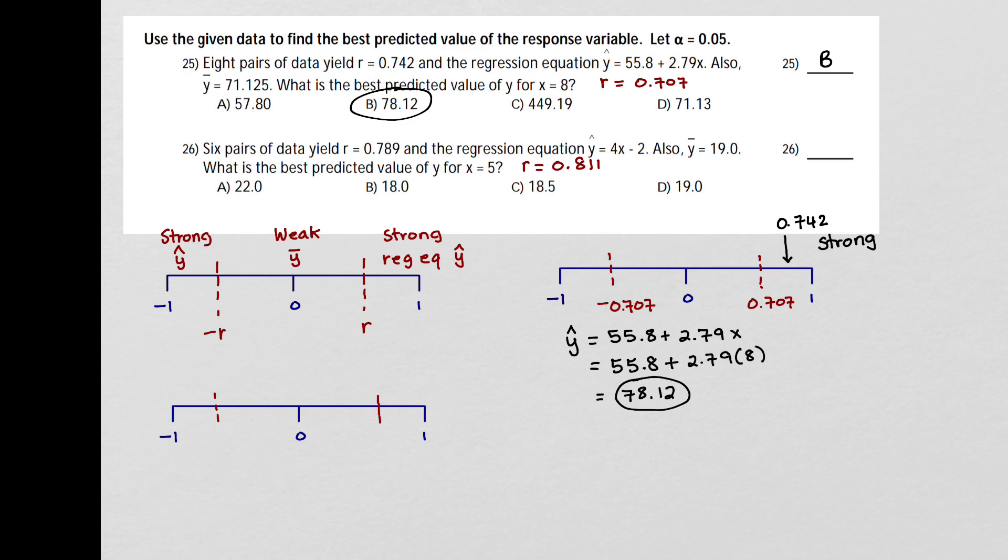So I'll mark that here and here on the number line. And we have a correlation coefficient of 0.789. So that correlation coefficient is going to fall between our two critical r values. And that tells me that there's a weak relationship. So this is where we use the mean of the y values. And they told us that was 19. So 19 is the answer for that problem. And that's how you do those.